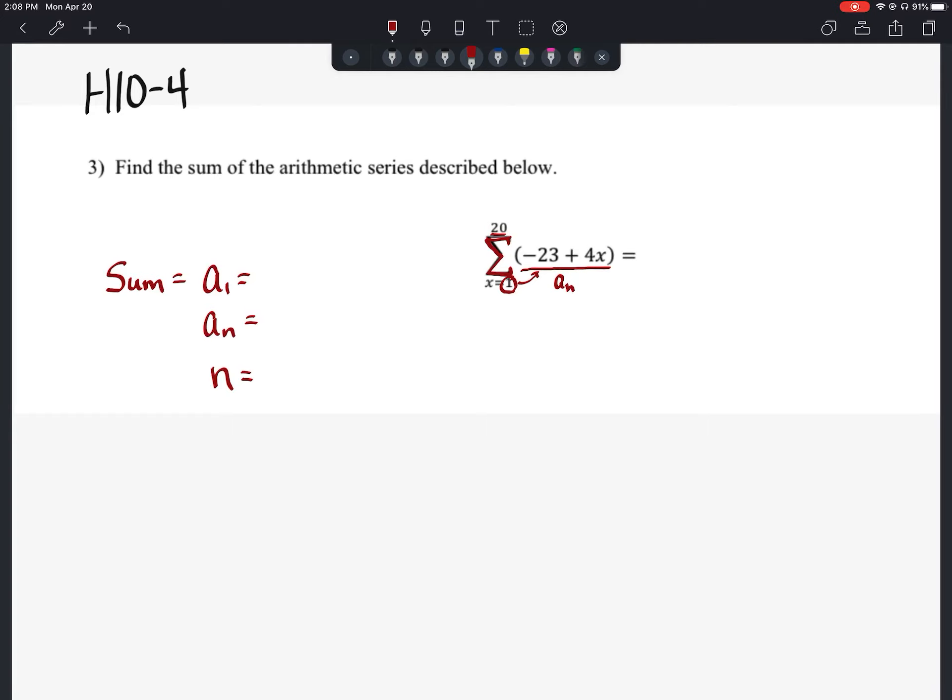a sub 1 then would be negative 23 plus 4 times 1. And in this case here, negative 23 plus 4 is going to give us negative 19. So the first term in this series is going to be negative 19.